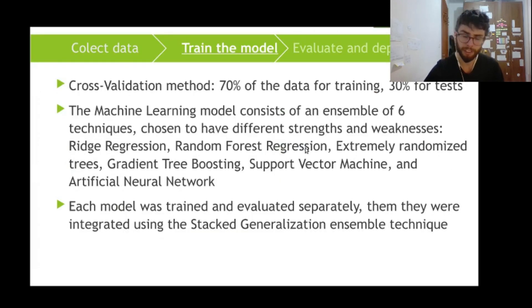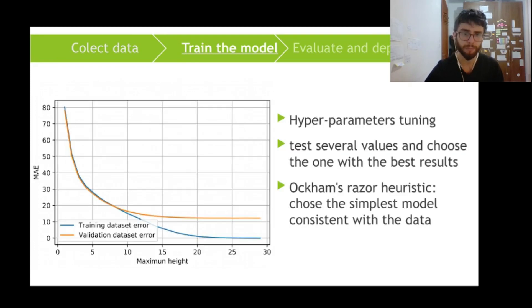So we trained these six models. We integrated the six models using the ensemble technique. And here we can see an example of how we did the search for hyperparameters. It was an heuristic search. So we tested several values and chose the ones that gave better results. And always taking into account the heuristic of Occam's Razor that if we have two different models that can equally well predict the output variable, we'll choose the simplest one.